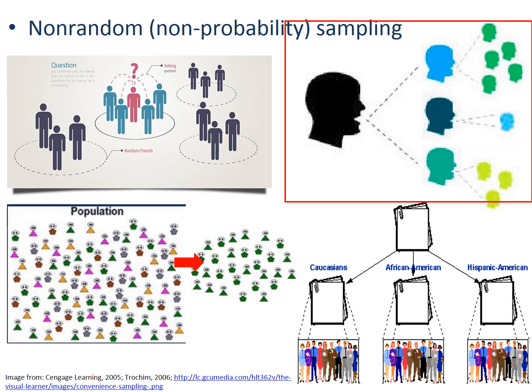The second type is snowball sampling. Basically, you use word of mouth. You find initial subjects and ask them to identify another potential subject who also meets the criteria of the research. For example, if you wanted to understand the work experience of female faculty on campus, you can contact five female professors and ask them to recommend their peers who are also female faculty. Again, this approach may also suffer in terms of the representativeness of the population.